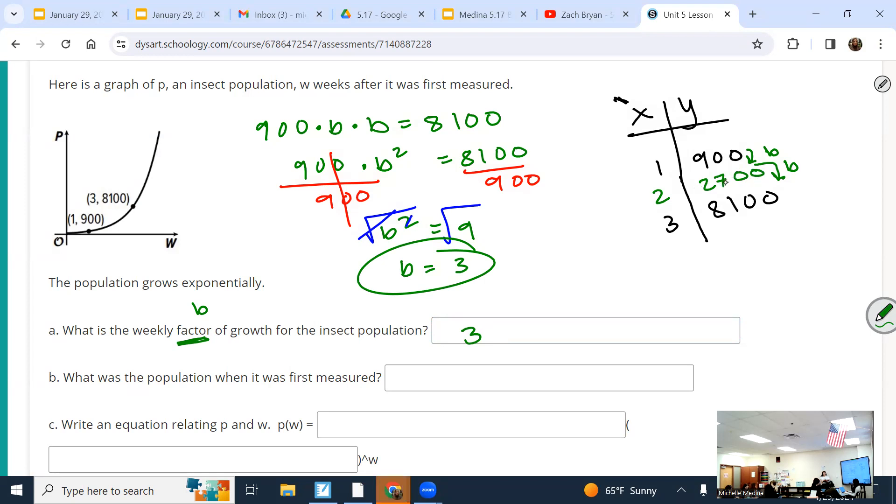So my weekly factor is going to be three. If I times 900 by three, I get this missing piece. If I times 2700 by three, I get 8100. Does that make sense? Okay, that's how you can figure out if they're not right next to each other. Then it says, what was the population when it was first measured? So what's the x value whenever it's first measured? Basically wants me to work backwards now. So what's opposite of multiplying by three? What's 900 divided by three? 300. So now you're working backwards, you do the opposite.